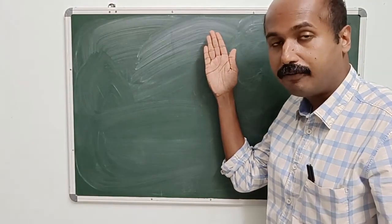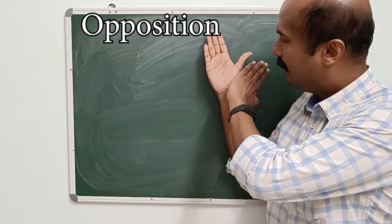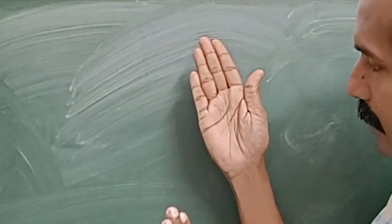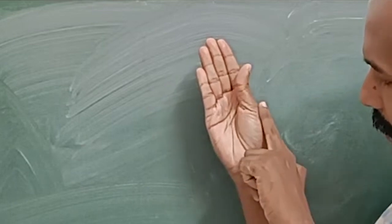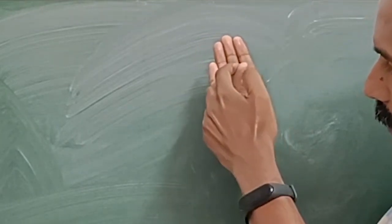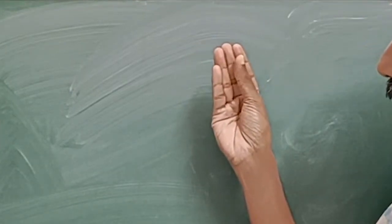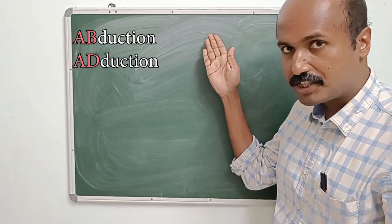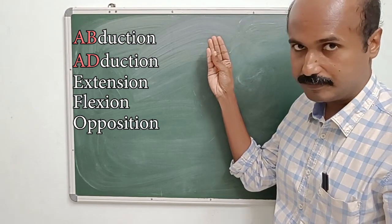One more movement exists for the thumb — that is opposition. Opposition is actually a sort of continuation of the flexion movement. If this is flexion, I can continue flexion to such an extent that the metacarpal will medially rotate and the thumb's palmar surface will now face the palmar surface of the other digits. That is called opposition. So the movements are: abduction, adduction, extension, flexion, and opposition.